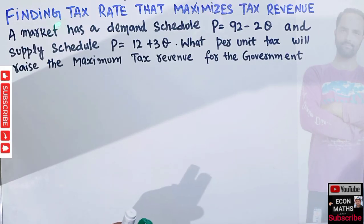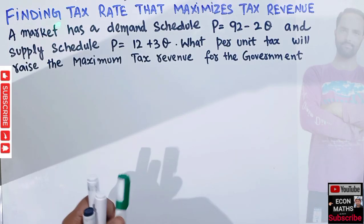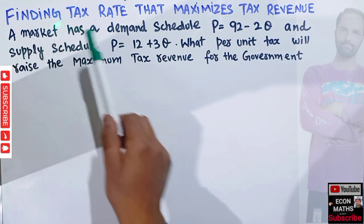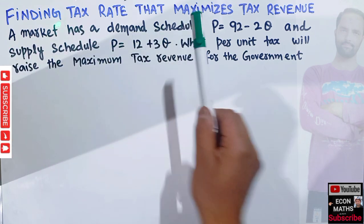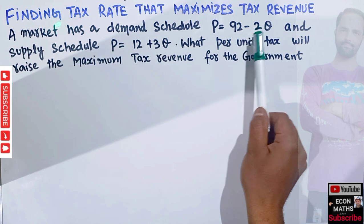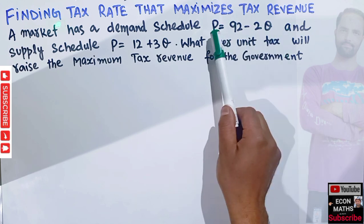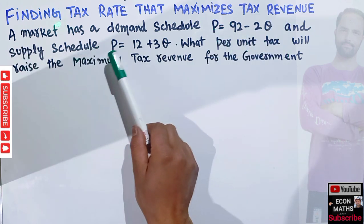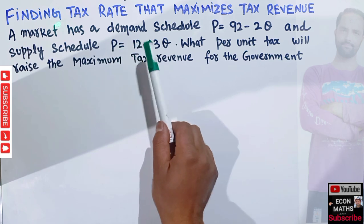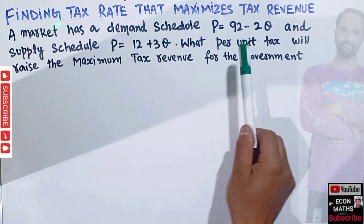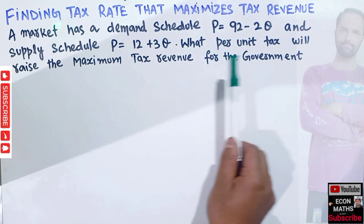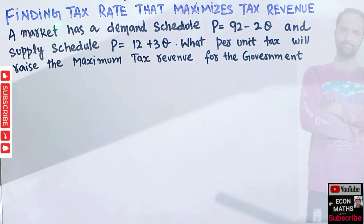In this video we will learn how to find the tax rate that maximizes the government's tax revenue. The question is: a market has a demand schedule of P = 92 - 2Q, where P is the price and Q is the quantity, and supply schedule P = 12 + 3Q. What per-unit tax will raise the maximum tax revenue for the government?